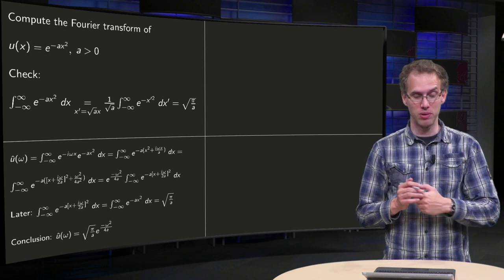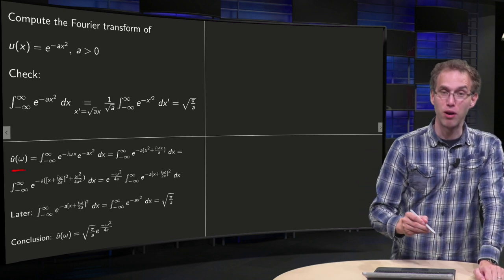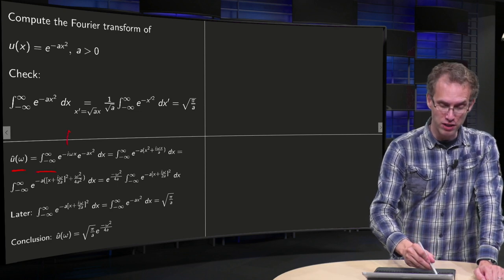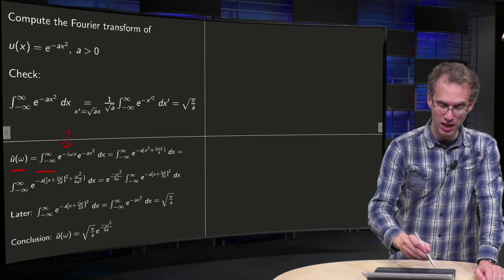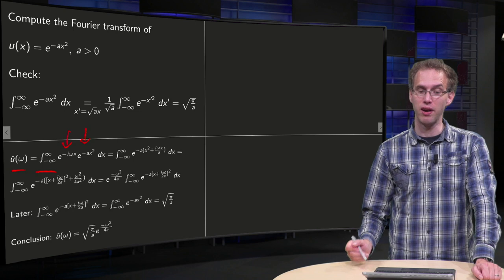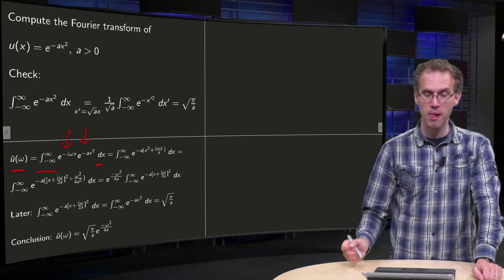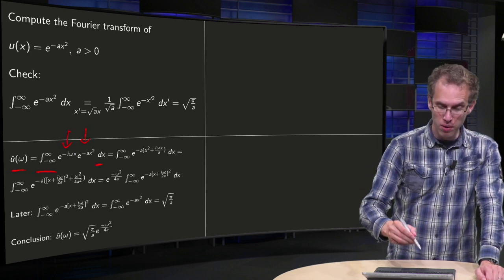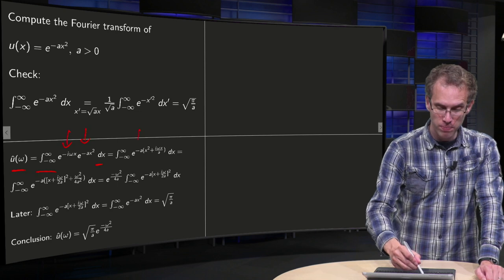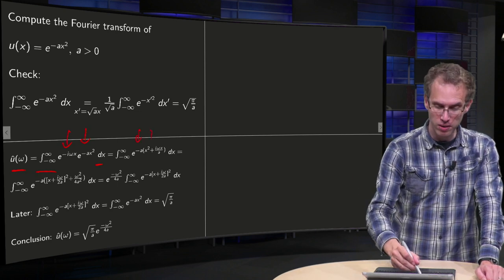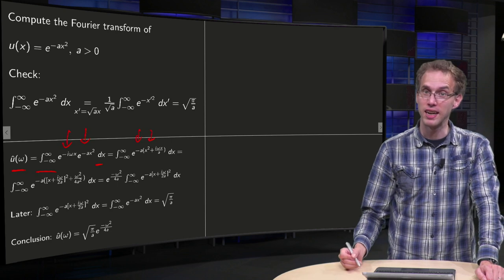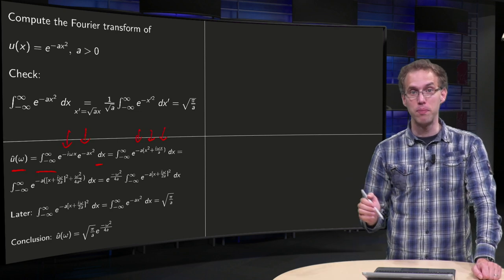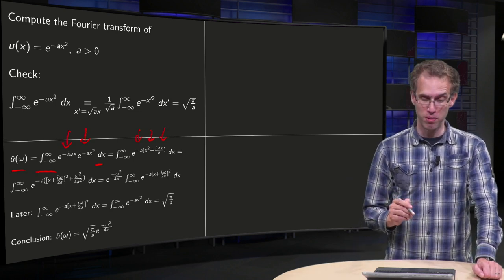If you are able to compute the integral, let's try. So our û(ω) — what do we get? We integrate from minus infinity to infinity, we add the factor e^(-iωx), and here we have our function u(x), and we integrate with respect to x. You see that you can form one exponent: take out the minus a already, so you get minus a in front, you get x² from the minus ax², and a plus iωx/a, because if you multiply by minus a, you get the minus iωx.